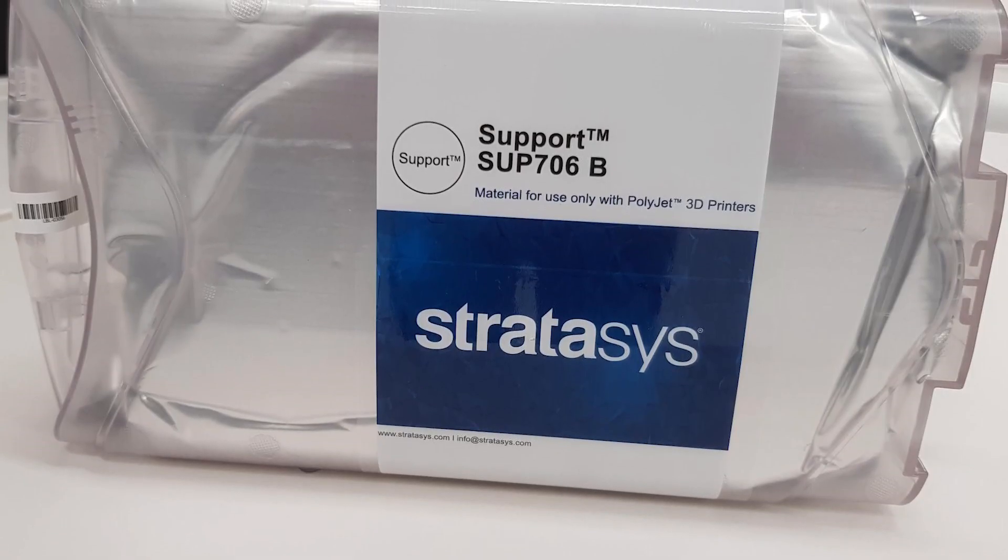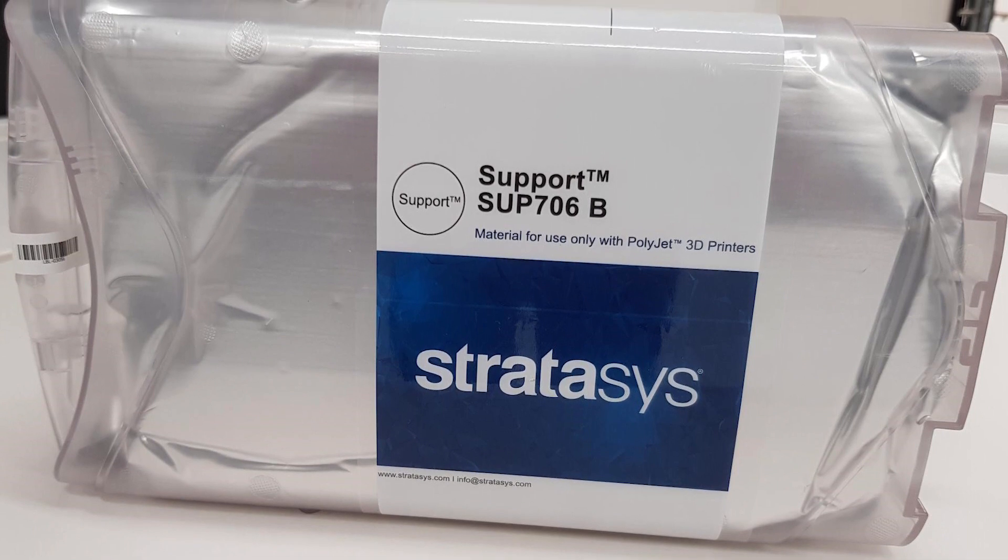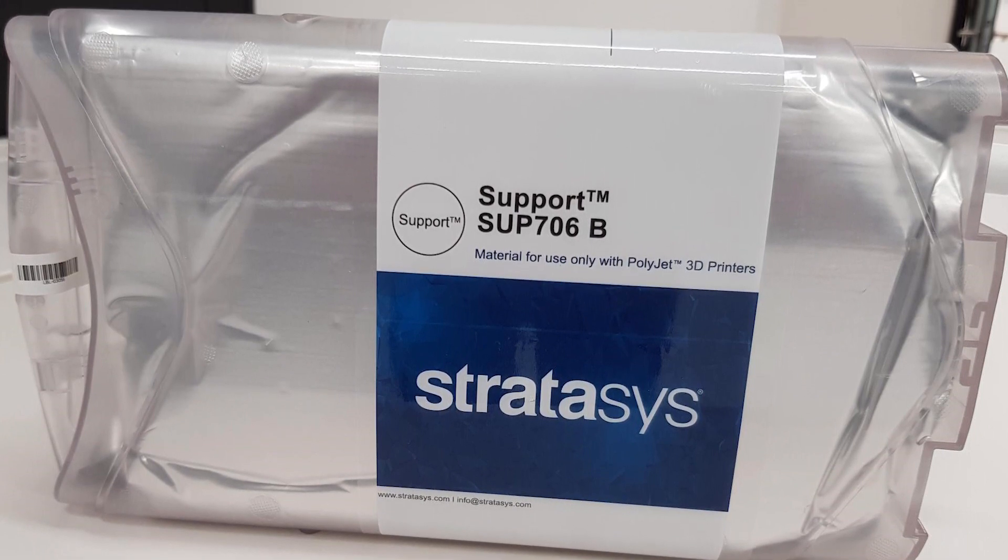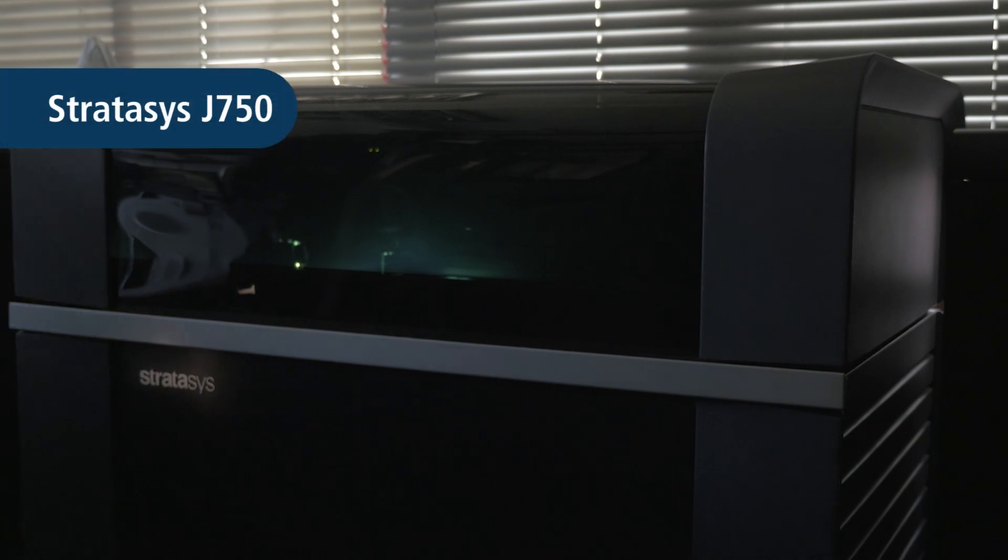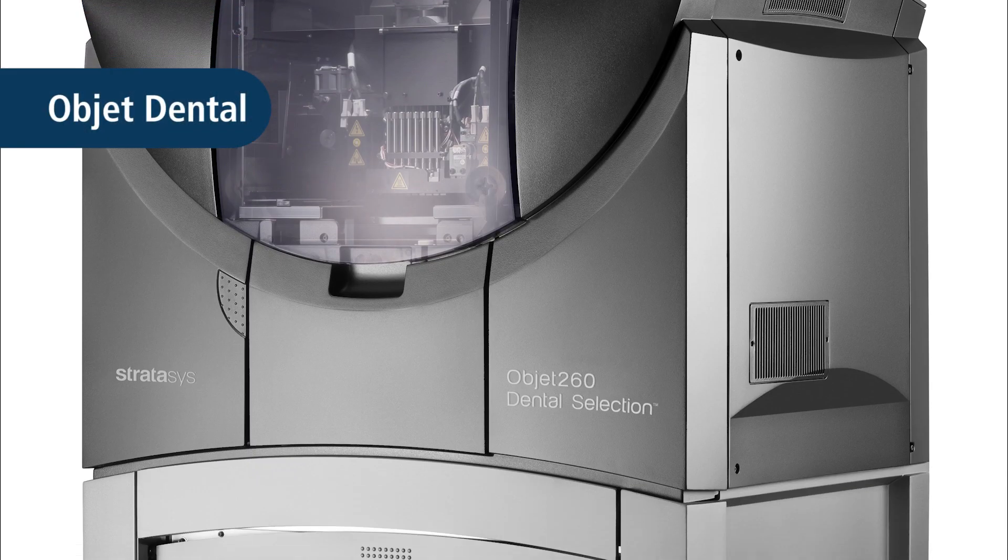Stratasys PolyJet new SUP706B brings high productivity and design freedom to Stratasys 3D printing solutions. It is available on Stratasys J750 family, Connex 3 series, Object 30 family and Object Dental Selection series.